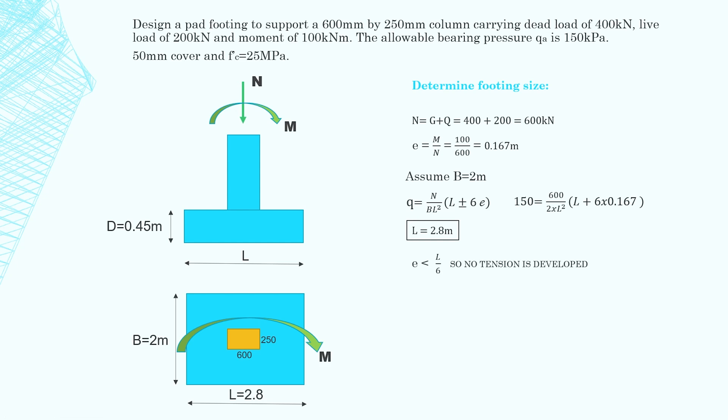So E less than L divided by 6, so no tension is developed. That's the middle third rule. Plugging the numbers into the equation, L divided by 6 is 0.47. So 0.167 is less than 0.47. So we're good. There's no tension under the footing. As I said, let's assume the height of the footing 450 millimeters.